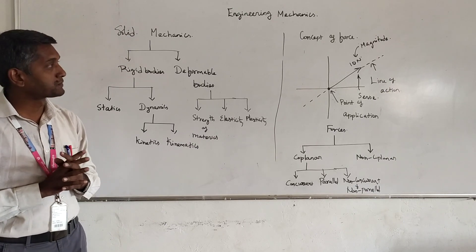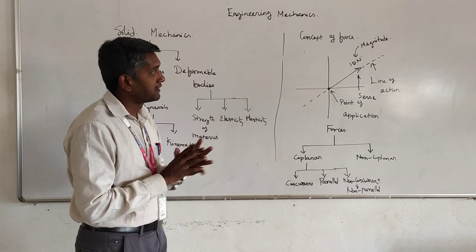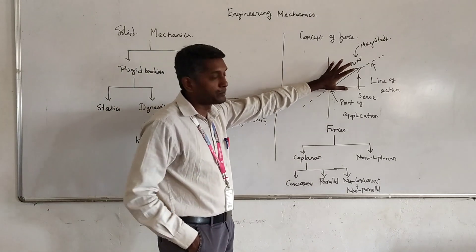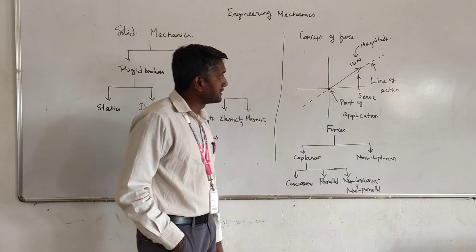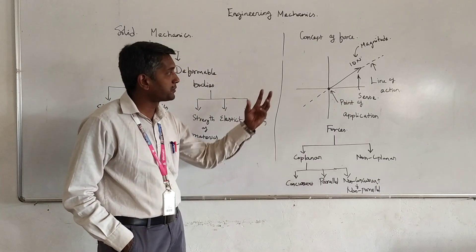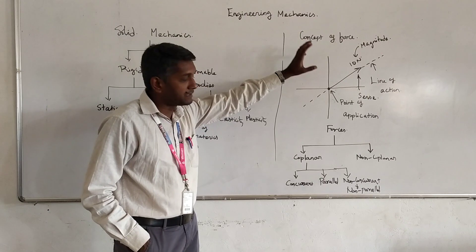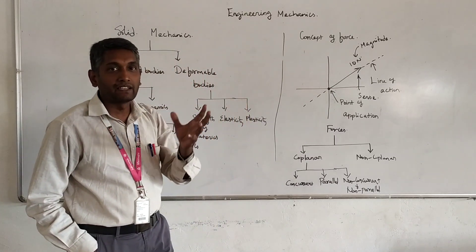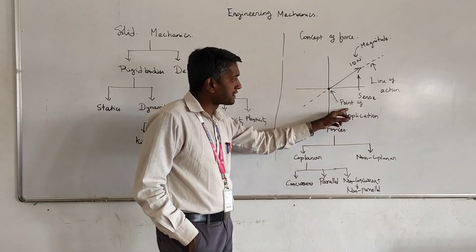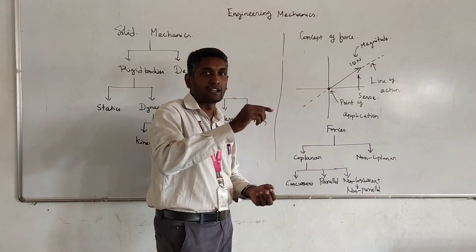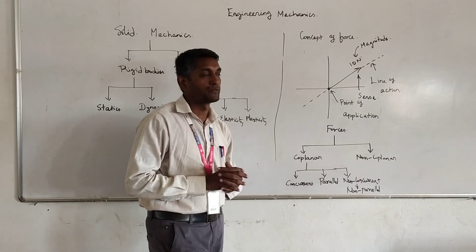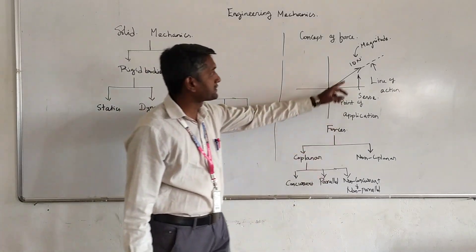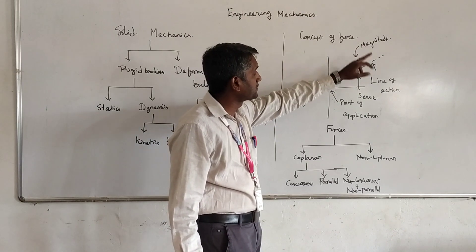Force is represented with certain parameters or attributes, categorized into four major levels. If a force of 10 Newtons is acting from a point, it must be represented with four attributes. The first is the point of application — the point where the force is exerted. The second is the line of action — the line along which the force travels. The third is the magnitude, represented as a numerical value.